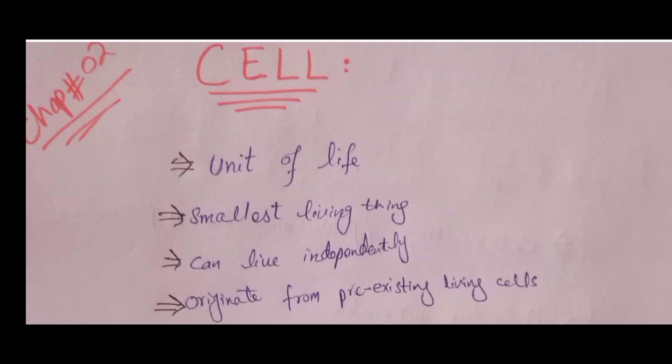Eukaryotic cells are complex cells. They contain all the necessary organelles such as mitochondria, Golgi apparatus, endoplasmic reticulum, ribosomes, and double-membranous DNA. Prokaryotic cells are very simple cells. They don't have double-membranous DNA; instead, their DNA is dispersed in the cytoplasm, and they don't have membrane-bound organelles such as mitochondria, Golgi apparatus, or chloroplasts.